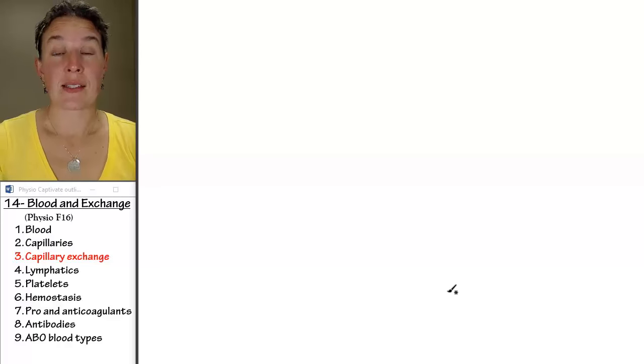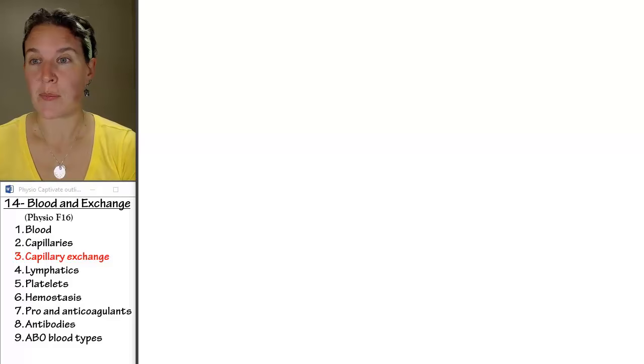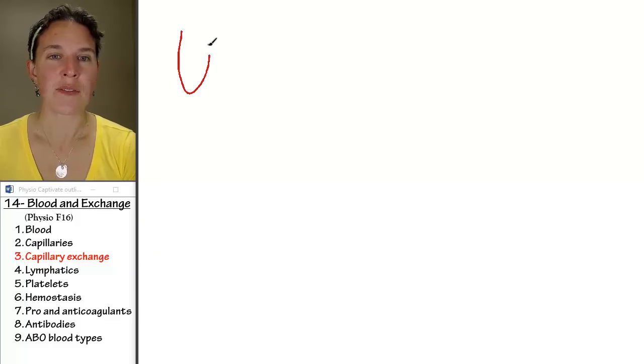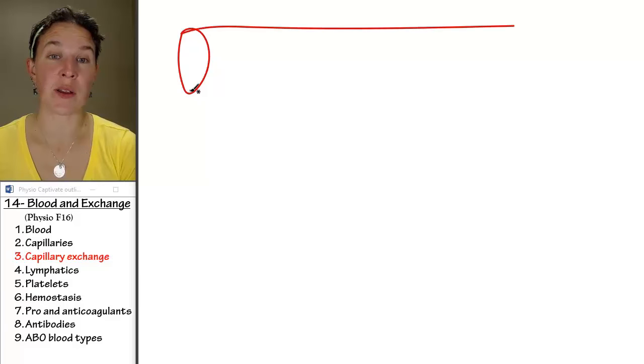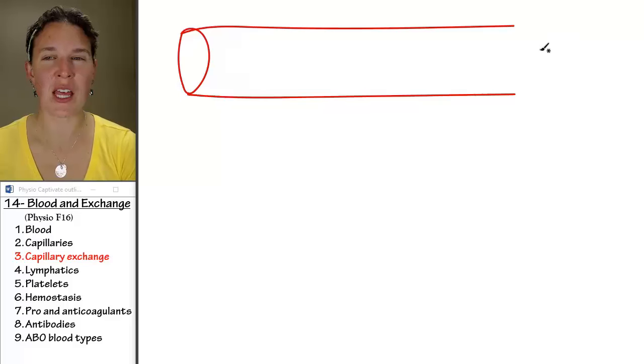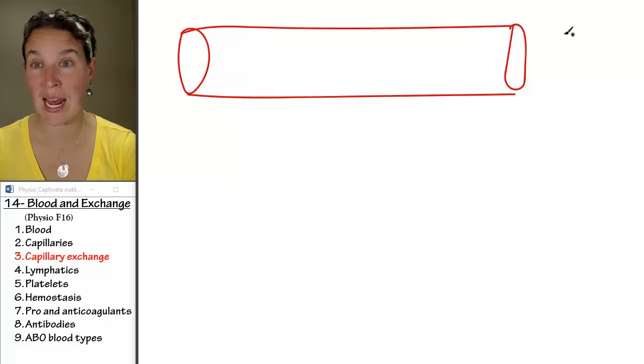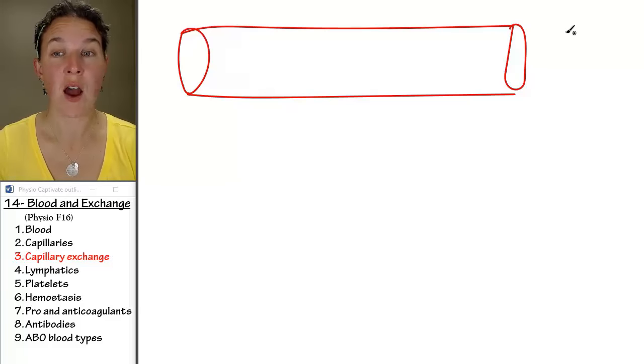We're going to talk about three ways that stuff can get in and out of the capillaries. So, to illustrate our three ways, we have to draw ourselves a picture of a capillary. We're going to make the assumption that all three of my in and out strategies are happening in a continuous capillary.